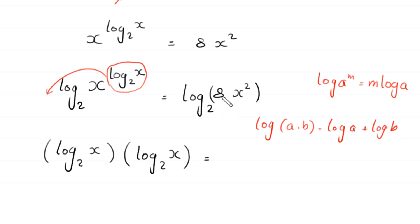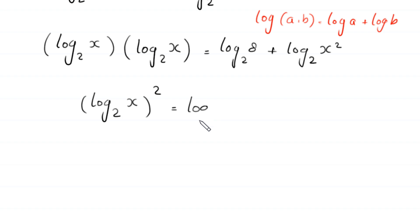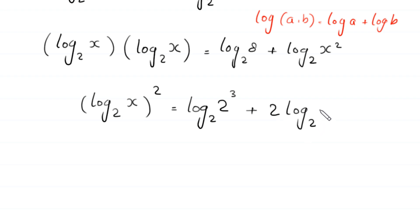The right-hand side, log base 2 of 8x squared, becomes log base 2 of 8 plus log base 2 of x squared. So the left side, log base 2 of x times log base 2 of x, becomes log base 2 of x squared, equal to log base 2 of 8 plus 2 times log base 2 of x.